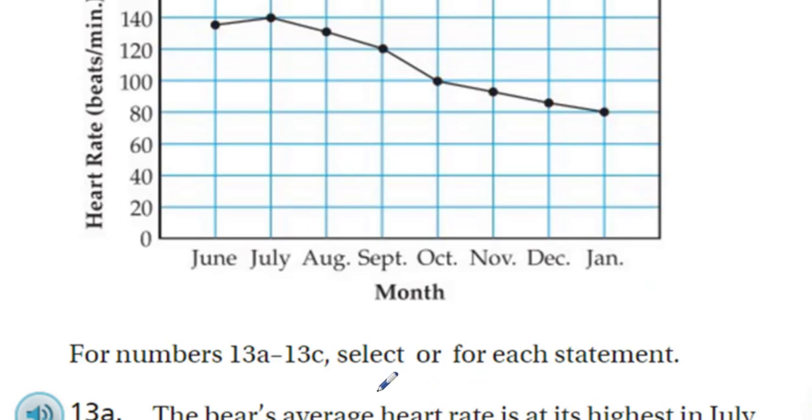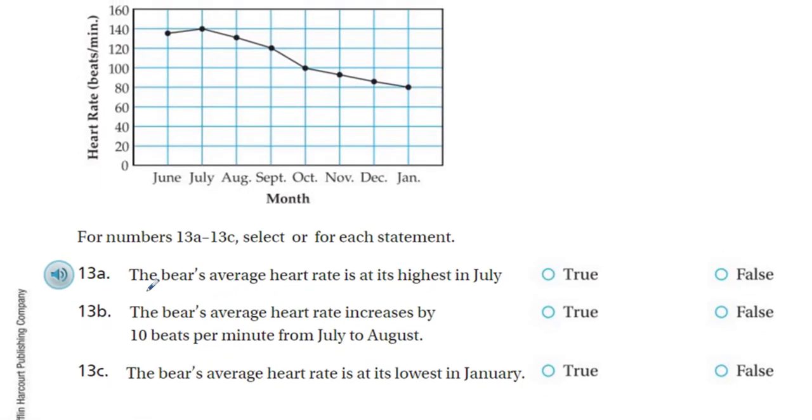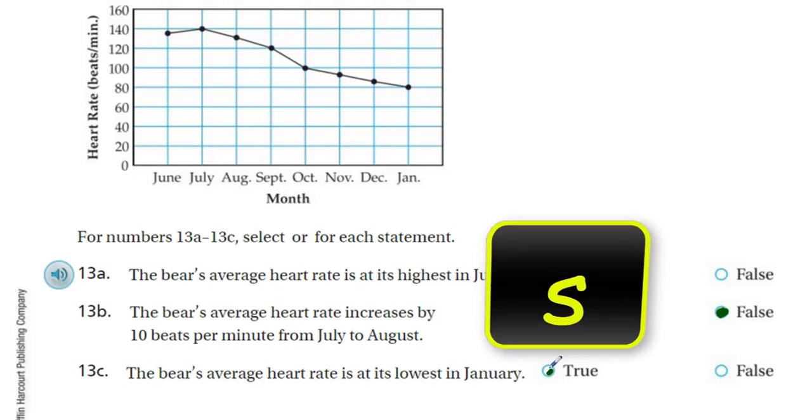All right. So for numbers 13A through 13C select or for each statement. It says the bear's average heart rate is at its highest in July. Well, I thought July was actually the highest. That is true. It is highest in July. Absolutely. True. The bear's average heart rate increases by 10 beats per minute from July to August. I'm going to go to July. Here's July. Here's August. Last time I checked, increases means it goes up. This is going down. From July to August, it's going down. No. That's false. The bear's average heart rate is at its lowest in January. There's January. It's right here at the end. Yeah. Okay. Believe that.